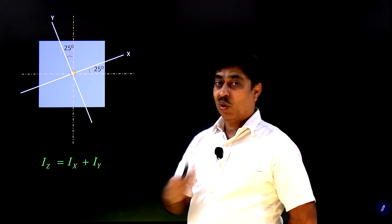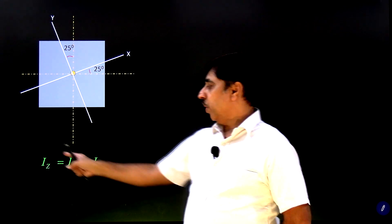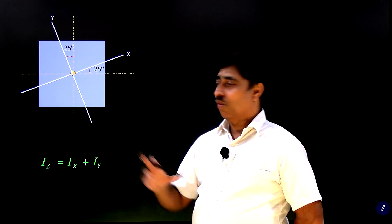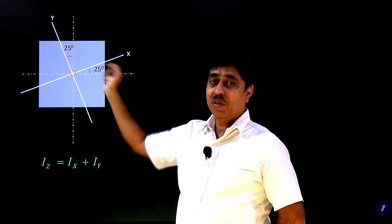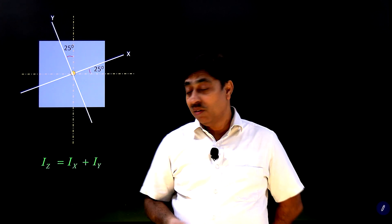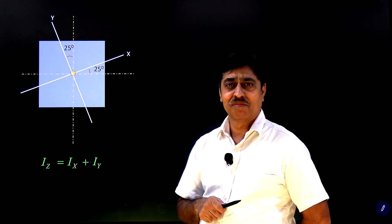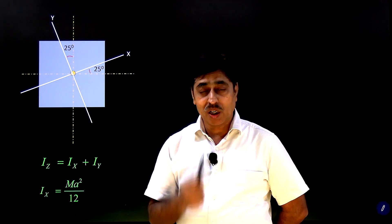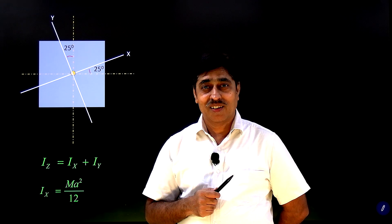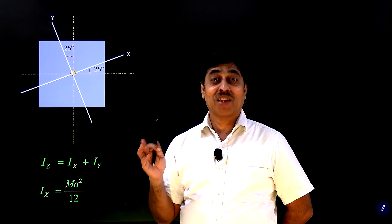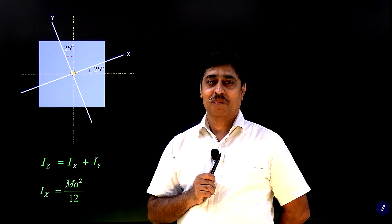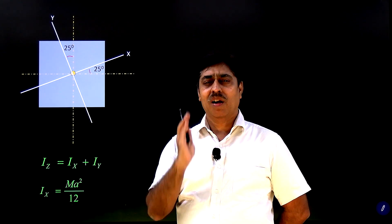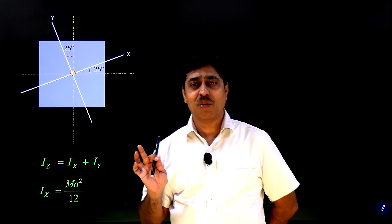The moment of inertia about the z-axis is ma² / 6. So Iz = Ix + Iy, and since Ix = Iy, we get 2Ix = Iz. Therefore, Ix = ma² / 12. This is your answer. You take any axis passing through the center of a square plate lying in its plane — any axis — and the moment of inertia is ma² / 12.